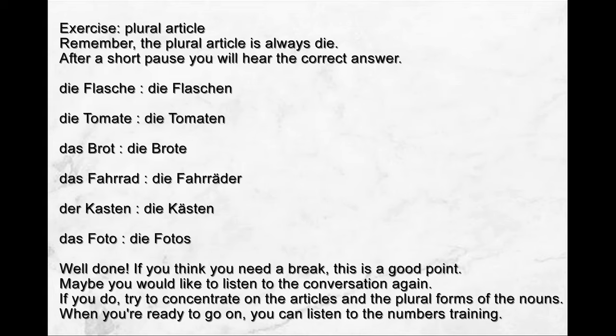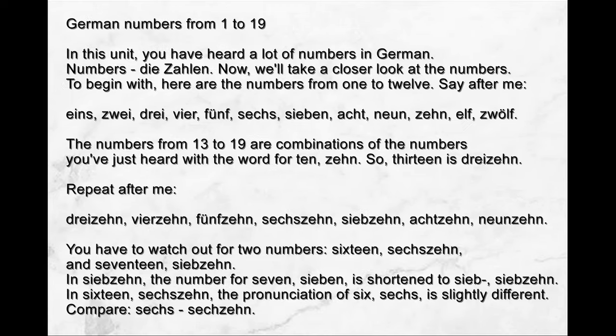Well done. If you think you need a break, this is a good point. Maybe you would like to listen to the conversation again and concentrate on the articles and plural forms. When you're ready to go on, you can listen to the numbers training. In this unit, you have heard a lot of numbers in German — die Zahlen. Now we'll take a closer look. Here are the numbers from 1 to 12: eins, zwei, drei, vier, fünf, sechs, sieben, acht, neun, zehn, elf, zwölf.